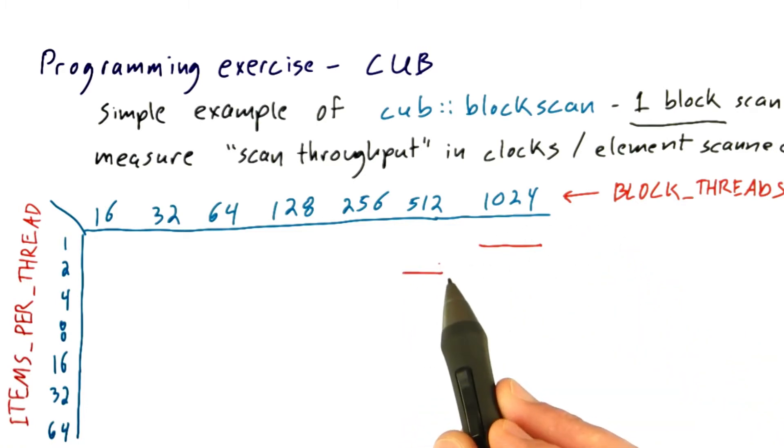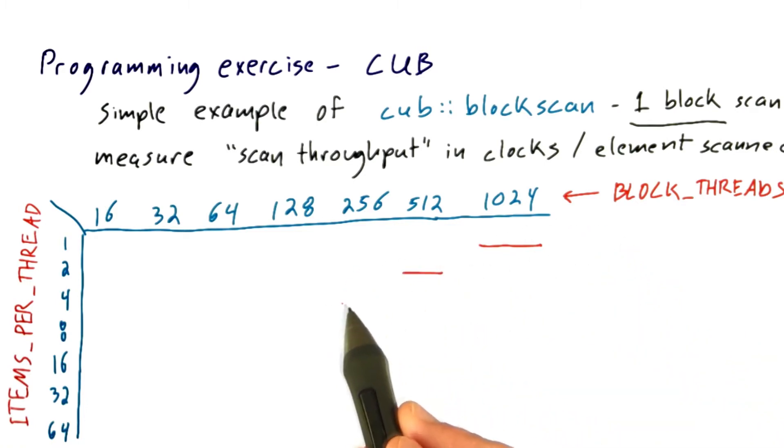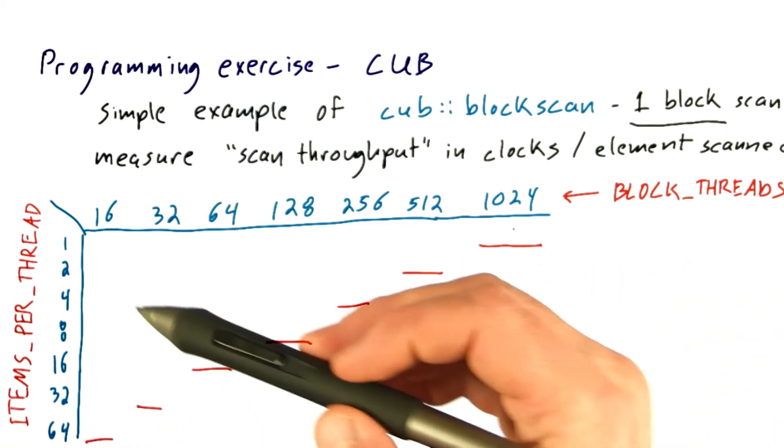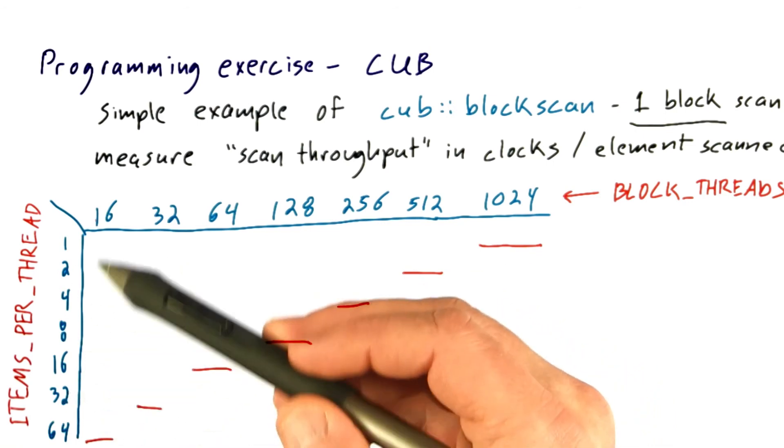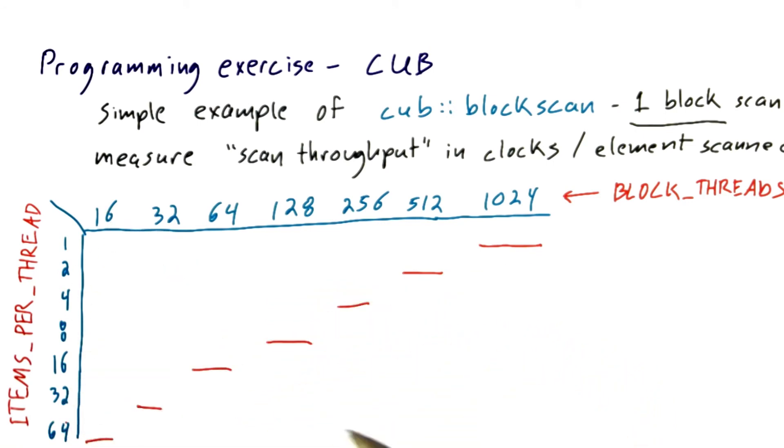Then analyze what happens with 512 by 2 threads, 256 by 4 threads, and 128 by 8 threads. Let's complete the diagonal—it won't take long. Go all the way down to 32 threads each responsible for 32 items, and 16 threads each responsible for 64 items.